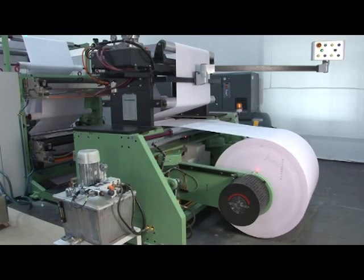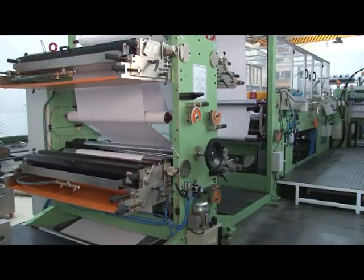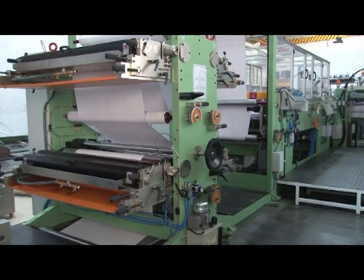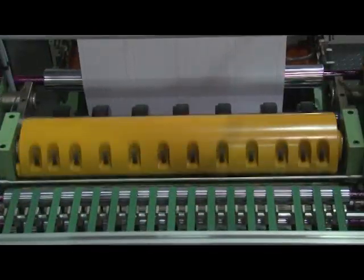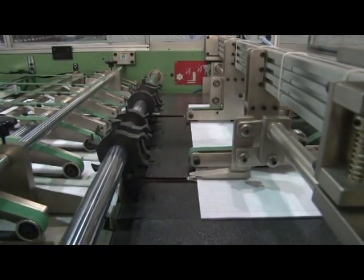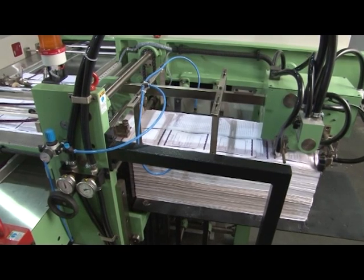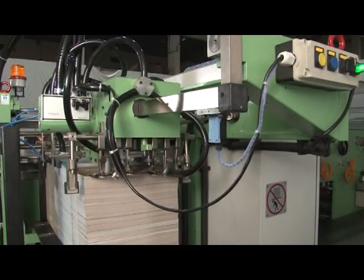This machine consists of a reel unwinding stand, ruling or flexo printing tower, cross-cutting unit, sheet overlapping device, sheet counting and collating unit, one inserter for index and one inserter for title cover.